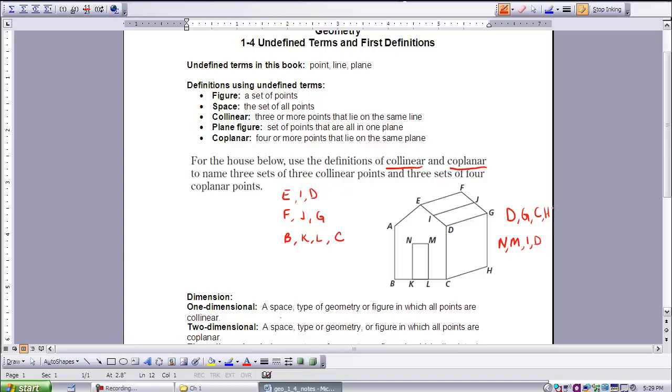Look here. I purposely chose some points that weren't your door or your boundaries. I kind of mixed it up a bit here. N, and M, and I, and D. These are all on the same flat surface or the same plane. So therefore, they are coplanar.